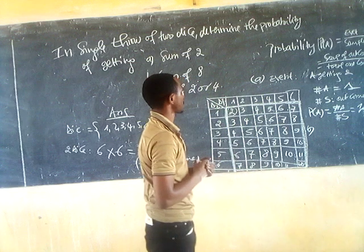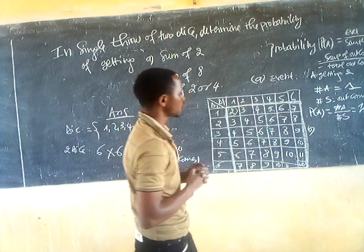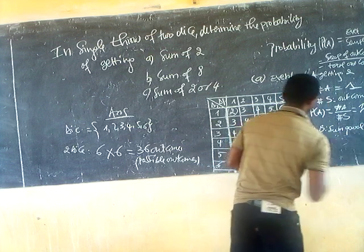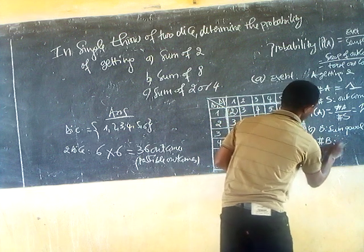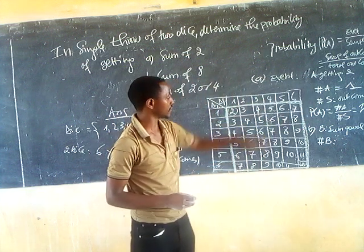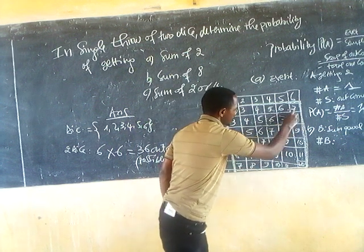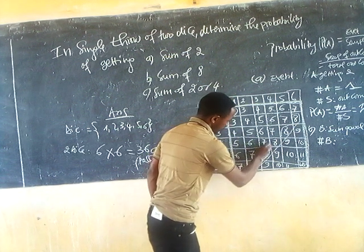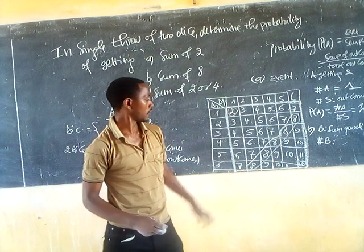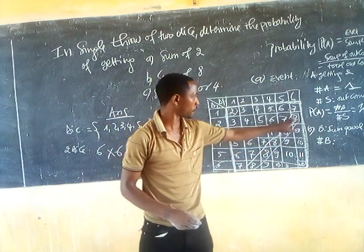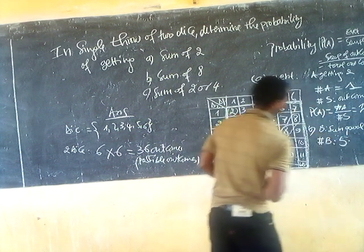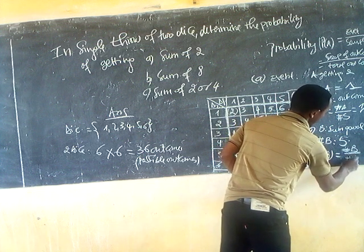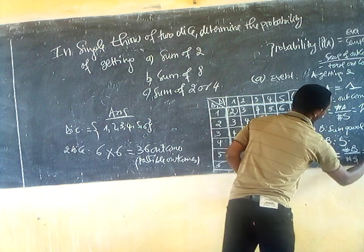For part B, the sum is equal to eight. We count how many outcomes give a sum of eight: one, two, three, four, five — that equals five outcomes. So the probability of B equals five over thirty-six.